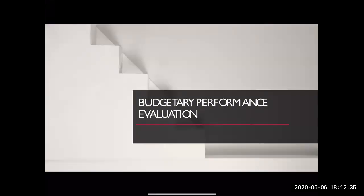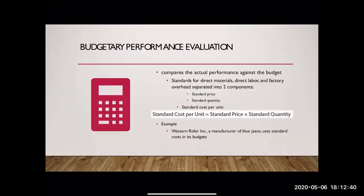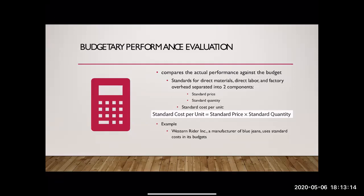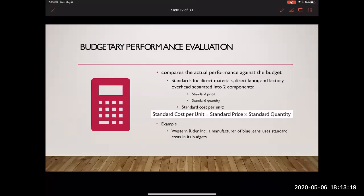Now let's talk about budgetary performance evaluation — this should sound familiar from chapter seven. Budgetary performance evaluation compares actual performance against the budget: how did I do compared to what the budget said I should have done? Standards for direct materials, direct labor, and factory overhead are separated into two components: standard price and standard quantity. The standard cost per unit formula is: standard price times standard quantity equals standard cost per unit.